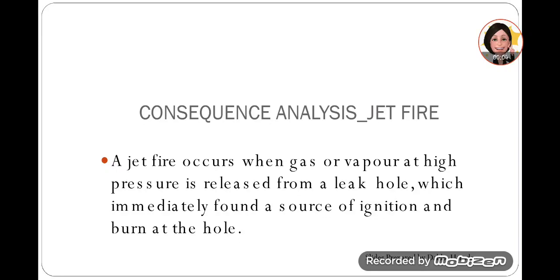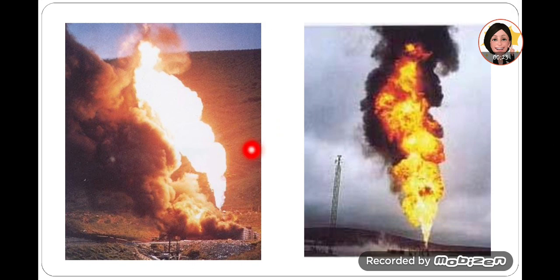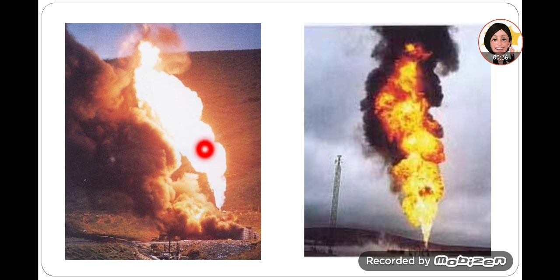Let's look into consequence analysis for jet fire. A jet fire occurs when a gas or vapor at high pressure is released from a leak hole, which immediately finds a source of ignition and burns at the hole. The bottom part of the jet is usually vertical, and then there is an impact from atmospheric conditions like wind, so it shoots at very high pressure and is deflected by the wind.